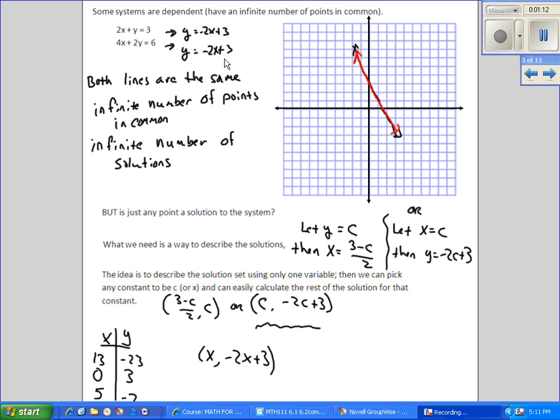And then others are dependent, which means they have an infinite number of points in common, which basically means they're at the same line. So when you graph them, they're on top of each other. So there's an infinite number of points that satisfy both equations, an infinite number of solutions.